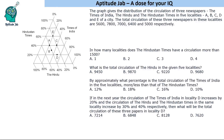Welcome to Aptitude Lab. This is a set based on a triangular graph. A triangular graph is a graph with three parameters, hence the shape is a triangle. It shows the distribution of circulation of three newspapers — the Times of India, the Hindu, and the Hindustan Times — in five localities: A, B, C, D, and E. The total circulation of these newspapers in these cities is given.